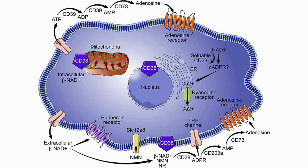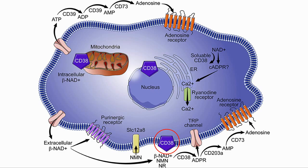As a note, an ectoenzyme is one that works outside or on the surface of a cell. In this case, CD38 is on the cell surface and acts in the extracellular space, although as we can see here, it is also present inside the cell. In this study, they show that the increase in CD38 in white adipose tissue — white fat cells — and the liver during aging is mediated by an accumulation of immune cells with CD38 attached.